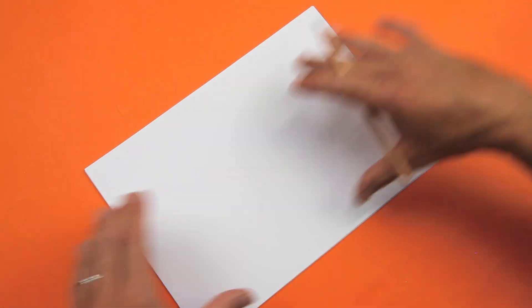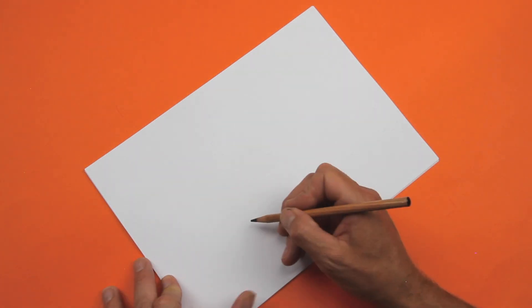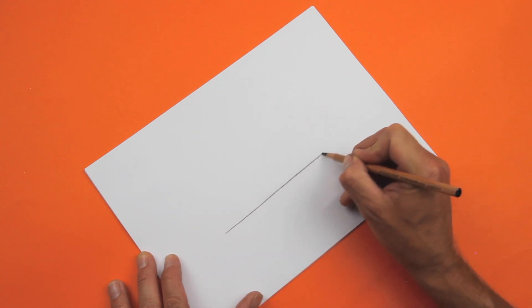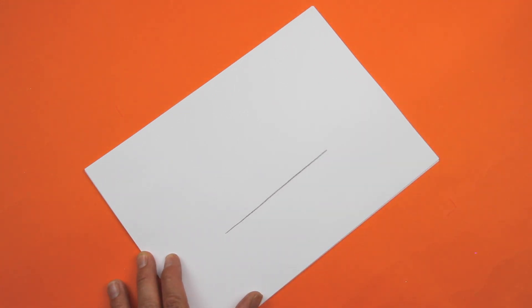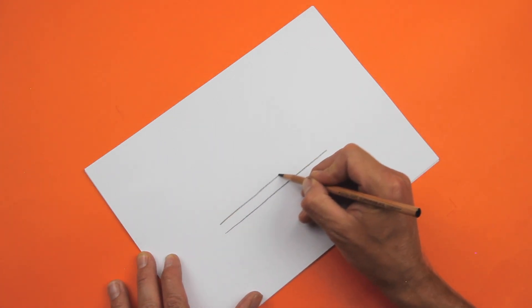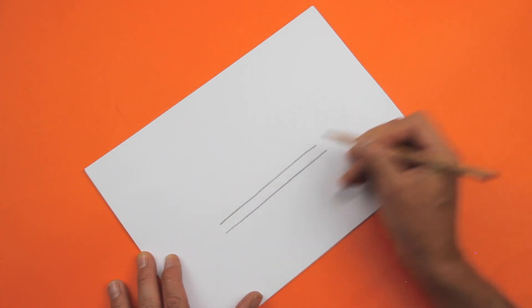Now we're going to draw a worm wearing a straw. So have your paper in the landscape mode. Get your pencil or your pen and do a nice straight line like that, and above it you do another straight line like so.